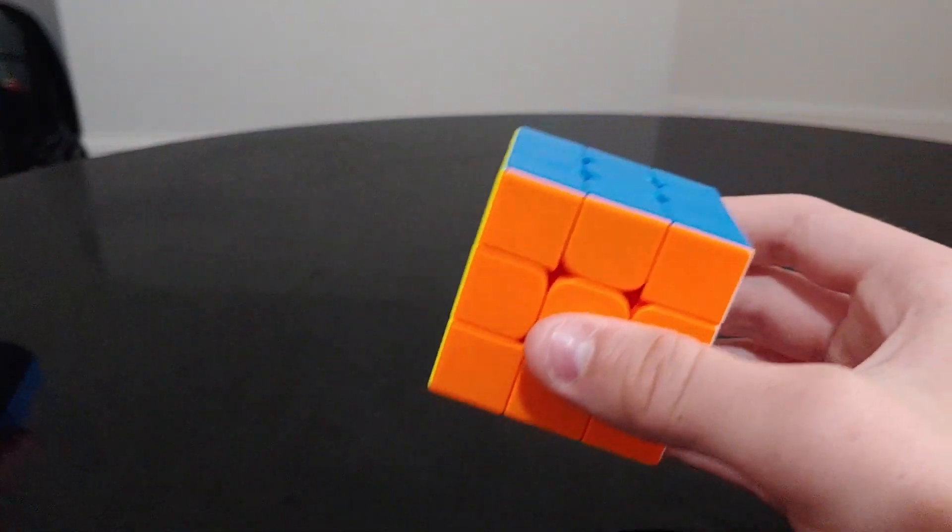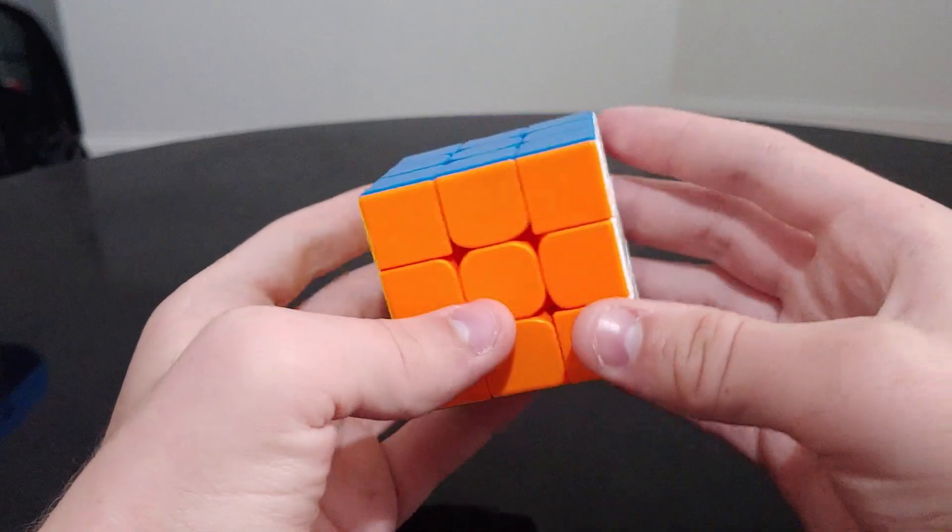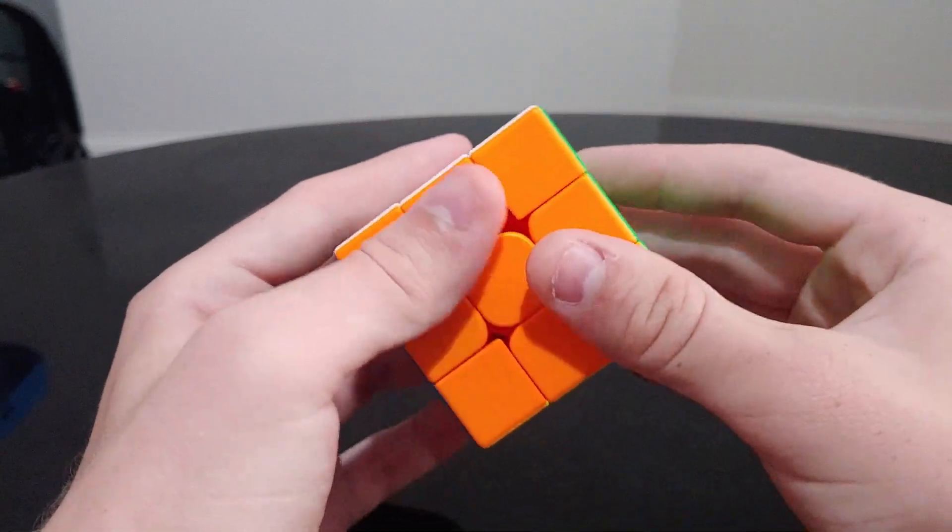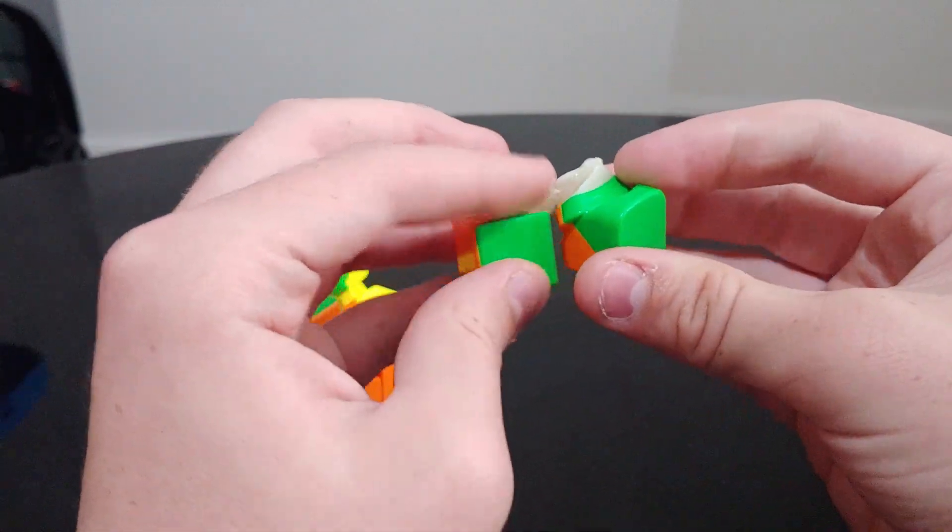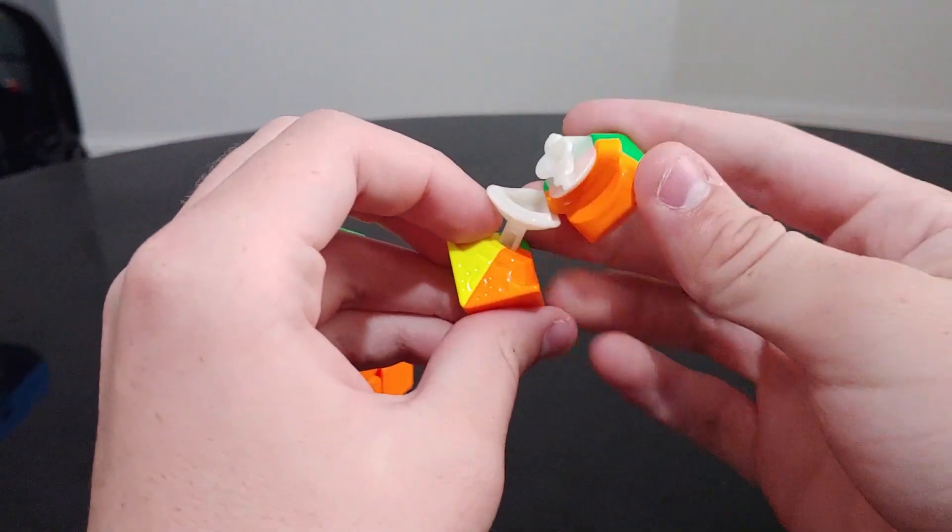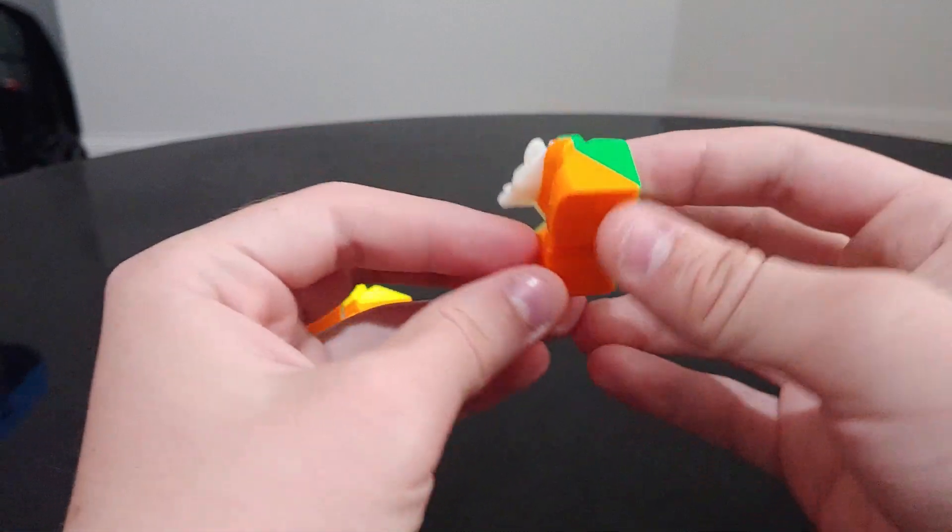Now let's take a look at the cube itself. This puzzle is based on the WRM 2020. It has identical pieces, as you can see here. Unfortunately, I don't have a WRM 2020 with me, but if you have one, you can compare them.